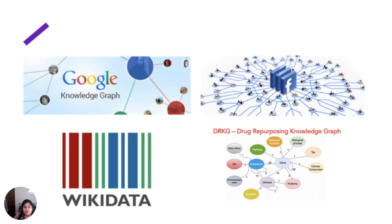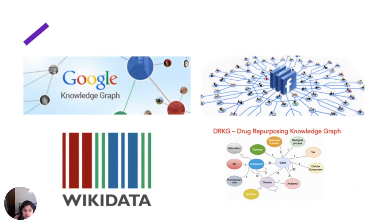Where are knowledge graphs being used? Knowledge graphs are being used at the back end of the Google search engine. Google stores information about real-world objects, their descriptions, and how they relate to other real-world objects in the form of a knowledge graph. Wikidata also uses some form of a knowledge graph for storing its information. Facebook's social network also takes its idea from a knowledge graph, and knowledge graphs are also used in the field of biomedicine for drug repurposing and other uses.